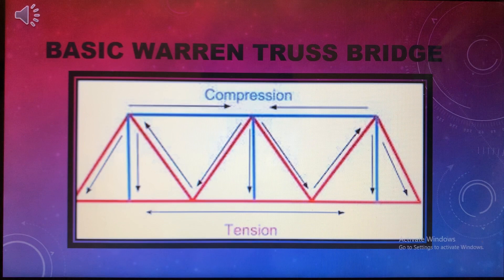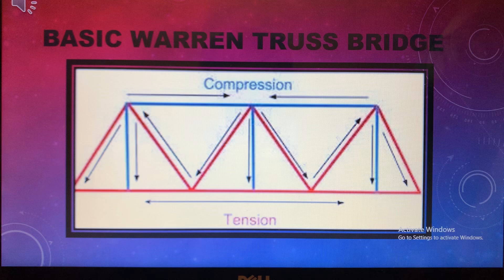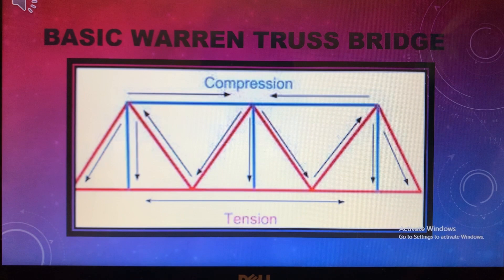This is the diagram of the Warren truss bridge. As you can see, the blue lines are compression and the red lines are tension. You can identify this as a Warren truss bridge because of the distinct W shape it makes. This is also one of the simpler designs, and some real-world examples can be found on train tracks, which support a lot of weight.